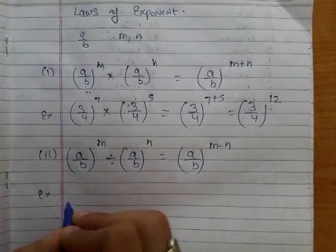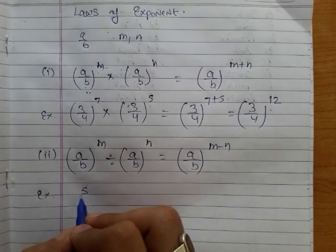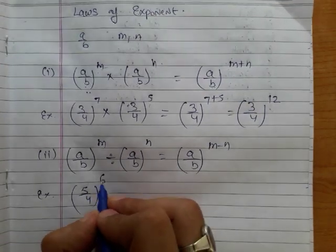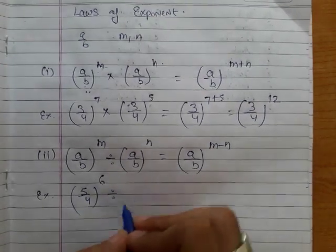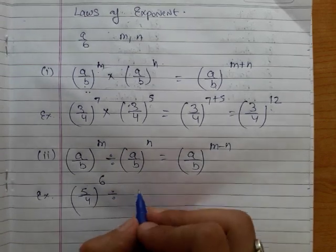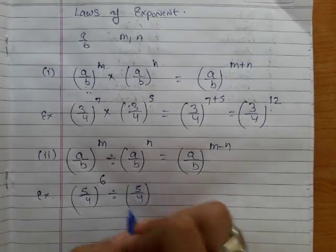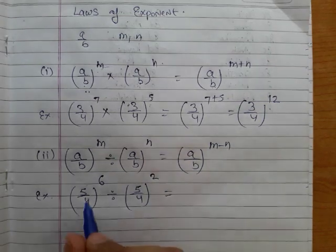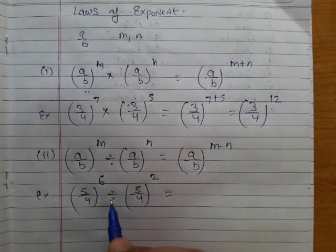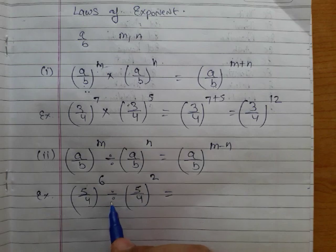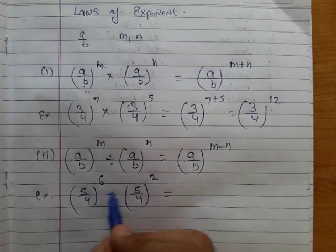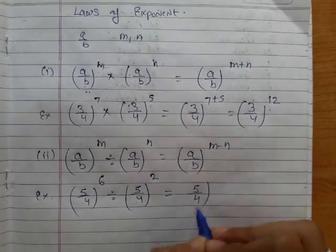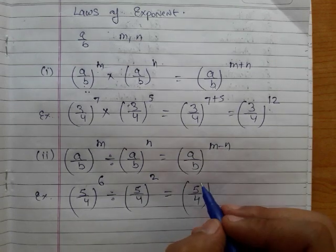For example, if there is a rational number 5 over 4 raised to the power 6, and this is divided by 5 over 4 raised to the power 2 — here you can see that both rational numbers are the same and there is a division sign — so we will subtract the powers. We will keep our rational number the same, 5 over 4, then subtract the powers.